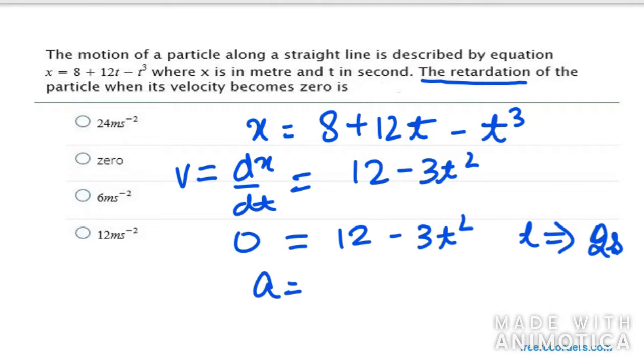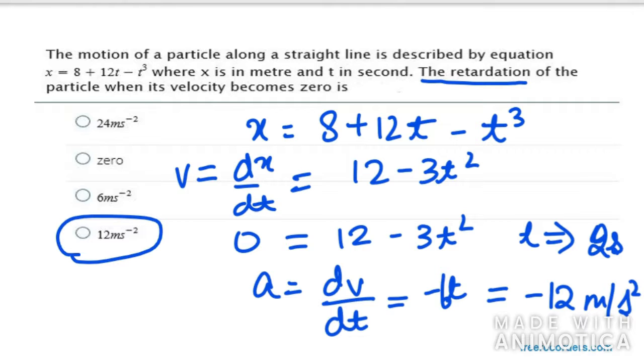Now we need to find acceleration. Acceleration is nothing but del v over del t. So we need to differentiate v with respect to t. So this will be minus 6t. Now as we know we have the value as 2 seconds, that gives answer as minus 12 meter per second square. So the right answer for this case is the third point.